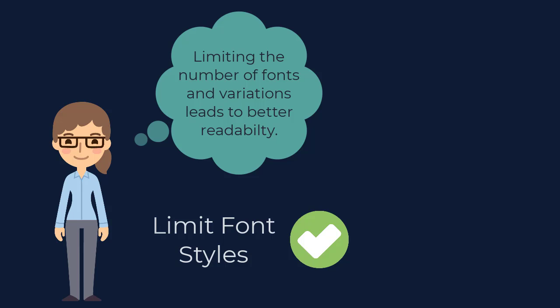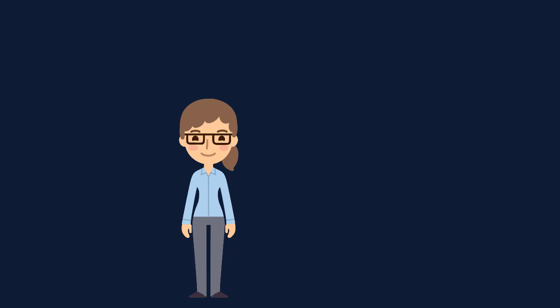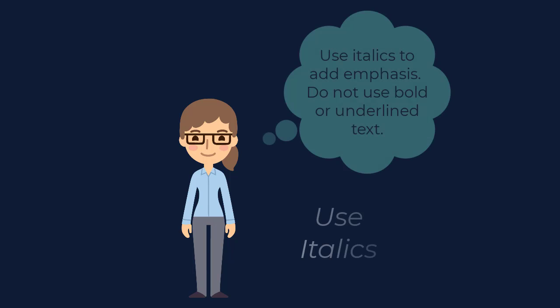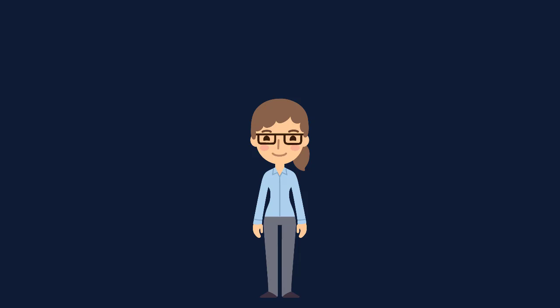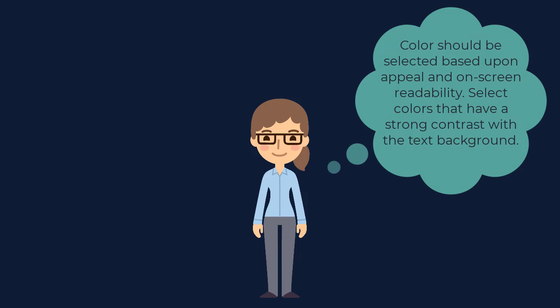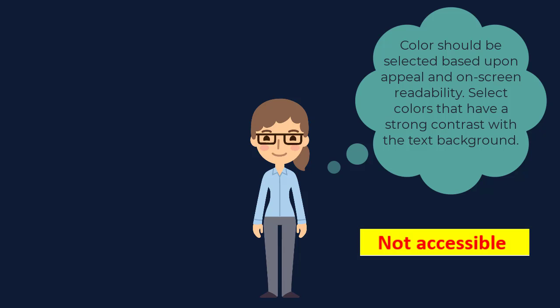If you would like to use a font variation or style to add emphasis to a specific section of text, we recommend using italics. We do not suggest using bolded text, and underlining text is not recommended, as it may be confused with hyperlinks. Another way to add visual appeal and emphasis to pieces of text is color. However, be careful when using color for emphasis. Screen readers cannot detect the color and formatting of written text. The use of color should be determined by whether or not it enhances on-screen readability. For example, using yellow or light gray text on a white background, or placing a yellow highlight over red text, may be eye-catching, but it's not accessible and may cause issues with readability.